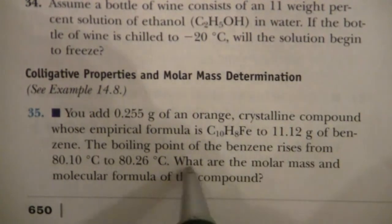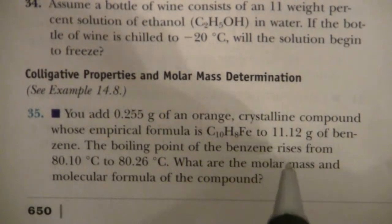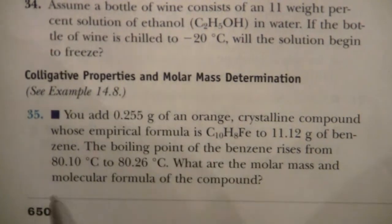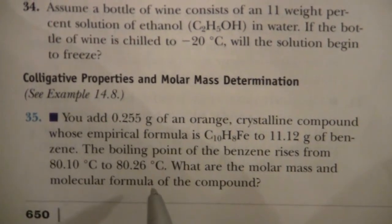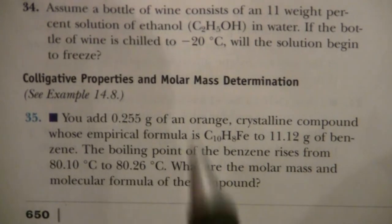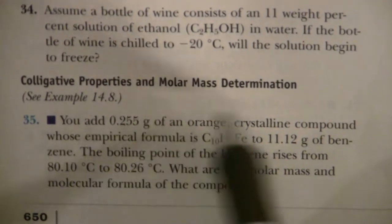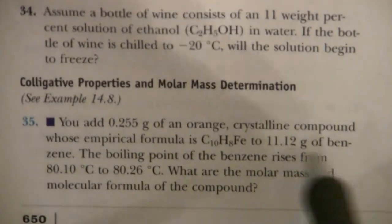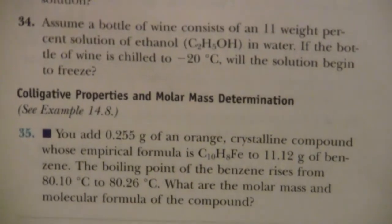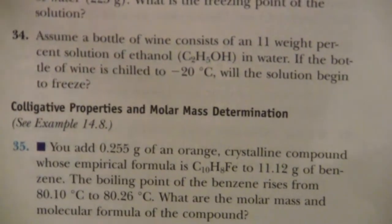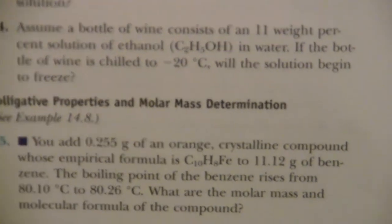So we want to find the molar mass and then from that and the empirical formula we can find the molecular formula. We add a certain amount of this compound to benzene to get the temperature increase of the boiling point.